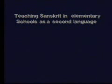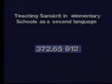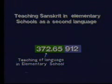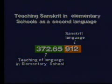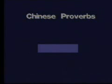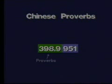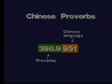Teaching Sanskrit in elementary school as a second language: the number is 372.65912. Here, 372.65 is the number for teaching of language in elementary school, and 912 is the number for Sanskrit language taken from Table 6, added as directed in the schedule under 372.65. Another example: Chinese proverbs. The number is 398.9951. The number for proverbs is 398.9 and the number for Chinese language from Table 6 is 951.